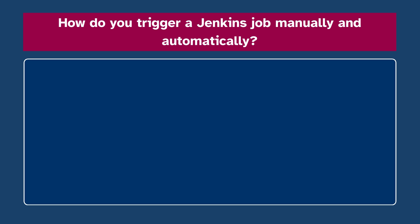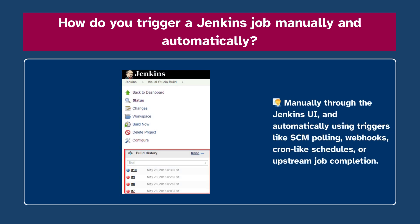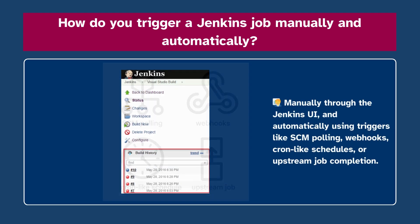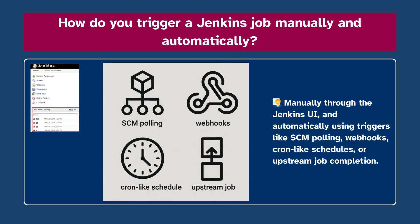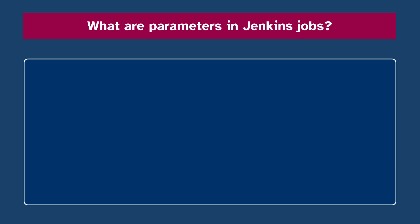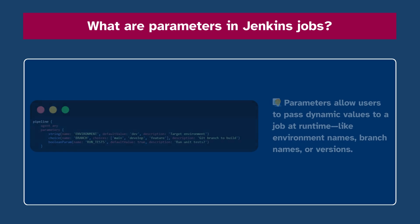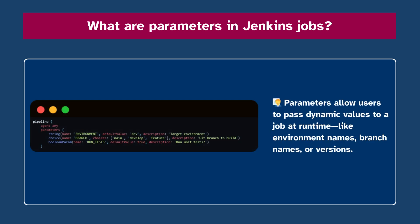Number twenty-two: How do you trigger a Jenkins job manually and automatically? Manually through the Jenkins UI, and automatically using triggers like SCM polling, webhooks, cron-like schedules, or upstream job completion. Number twenty-three: What are parameters in a Jenkins job? Parameters allow users to pass dynamic values to a job at runtime, like environment name, branch names, or version numbers.